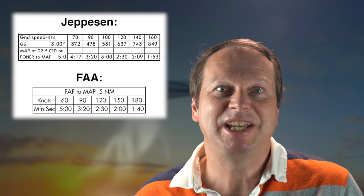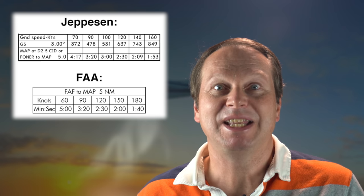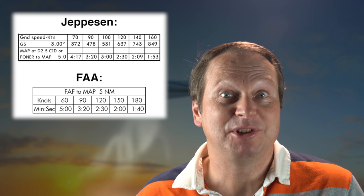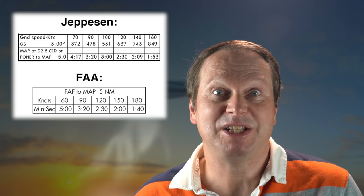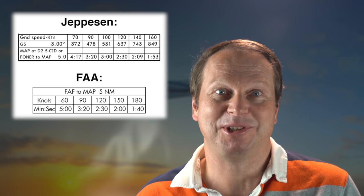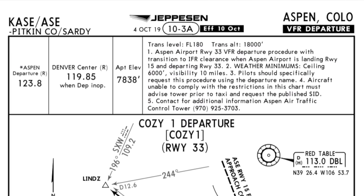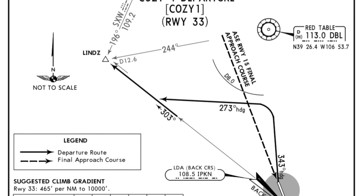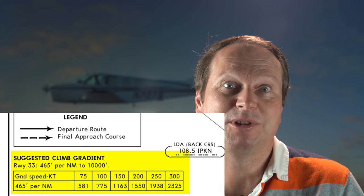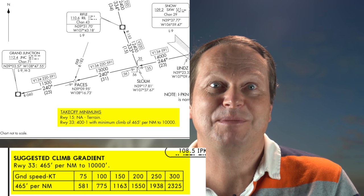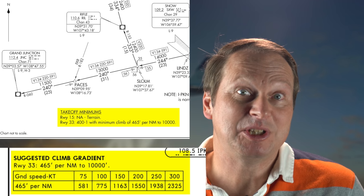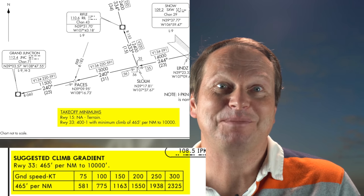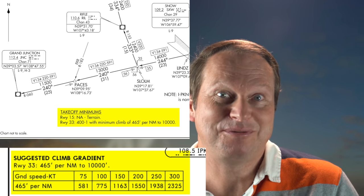For charts that have timing data for the final approach segment, you'll see Jeppesen and the government both use a table, but they differ in the selection of ground speeds. The government charts have pretty big jumps of 30 knots from one speed to the next, and Jeppesen offers finer steps here. Another example of how Jeppesen tries to make things a little easier is for the vertical climb gradient on an instrument departure, like here in Aspen. 465 feet per nautical mile are required, but Jeppesen also includes a table of what that means in feet per minute for different ground speeds. After all, our vertical speed indicator in the cockpit shows feet per minute, not feet per mile.